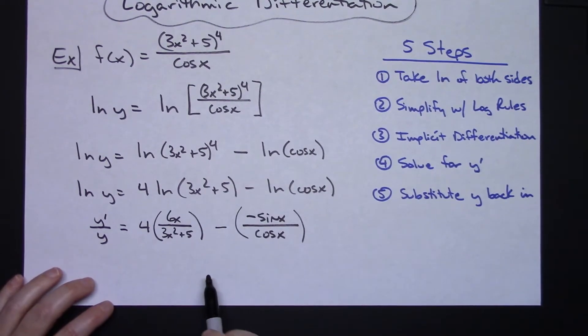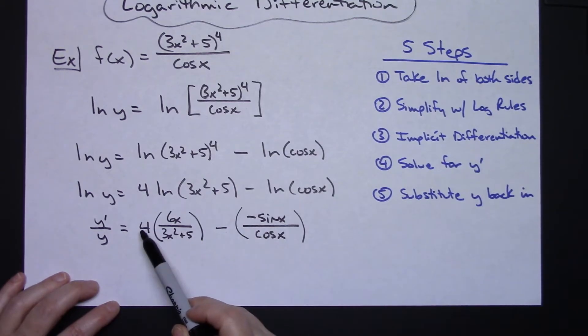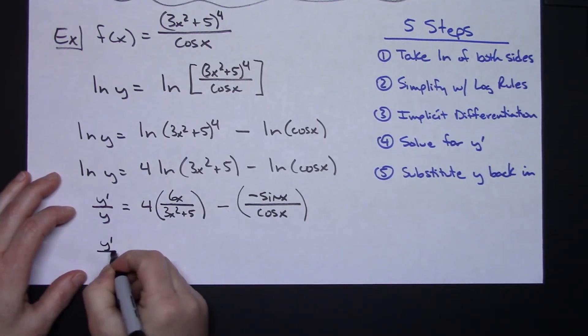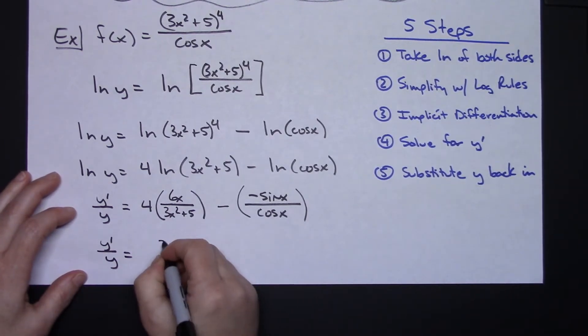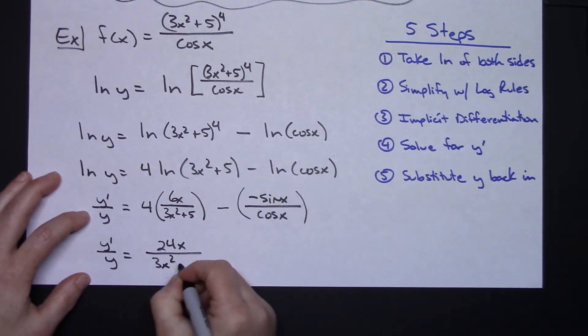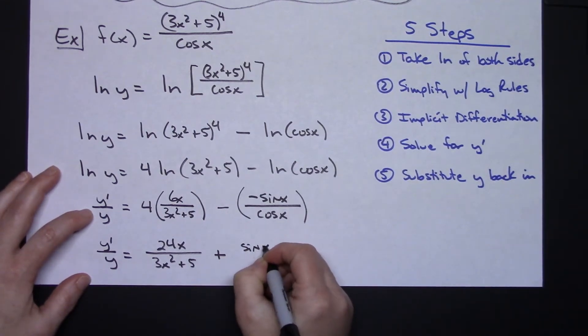Now I'm going to do a little bit of simplifying here. I've got a minus and negative so I can turn this to a plus. I'm going to multiply that numerator right there. So then I'm going to have y prime over y equals 24x all over 3x squared plus 5. Change this to a plus and then sine x over cosine x.